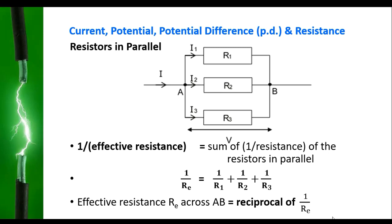For resistors connected in parallel, the effective resistance of the three resistors connected in parallel in this case will be the sum of the reciprocal of the resistance in parallel. Mathematically, it is represented as: 1 over R effective equals 1 over R1 plus 1 over R2 plus 1 over R3.